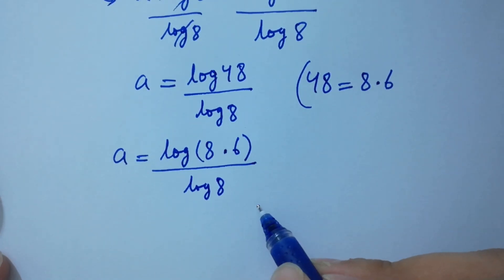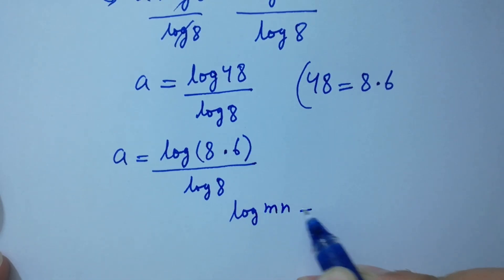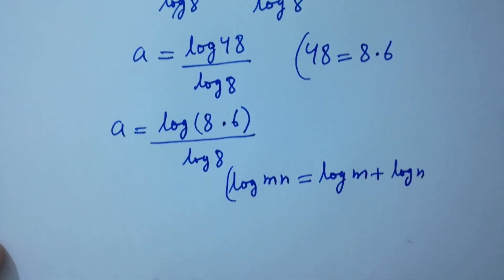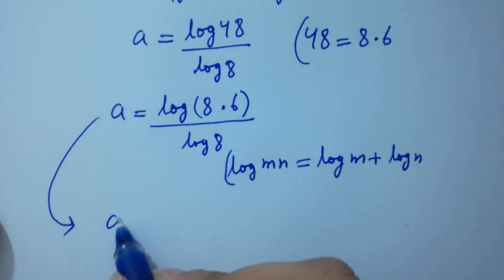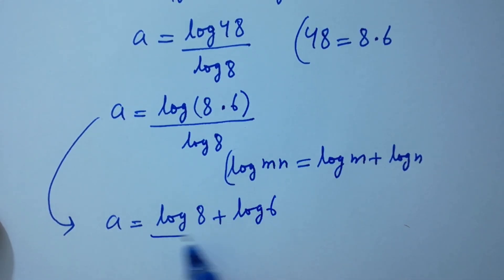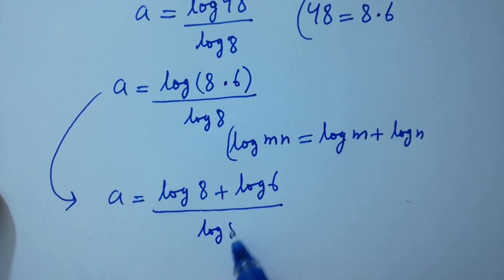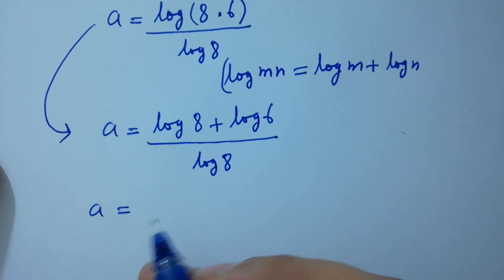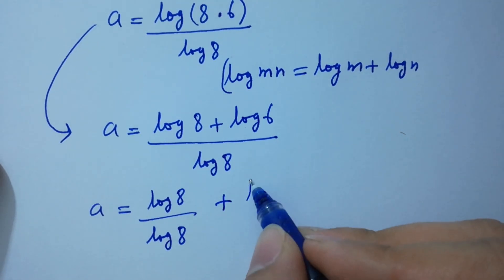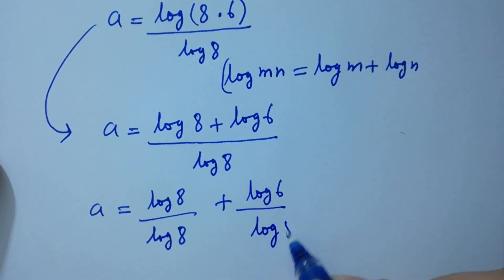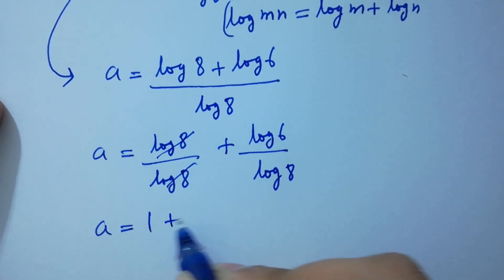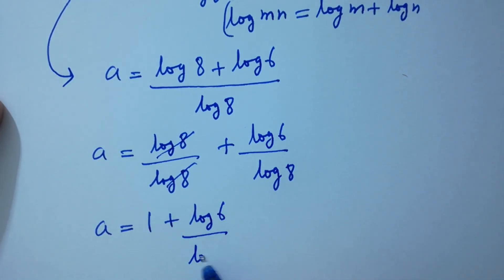As log(mn) equals log m plus log n, a equals (log 8 plus log 6) over log 8. This gives a equals log 8 over log 8 plus log 6 over log 8. Log 8 and log 8 cancel, so a equals 1 plus log 6 over log 8.